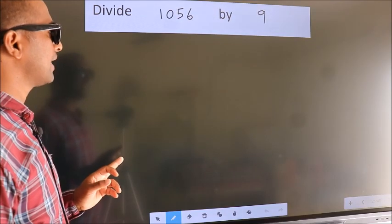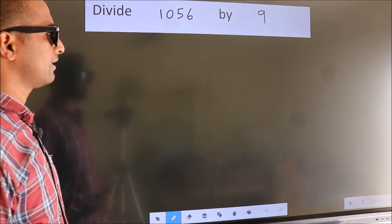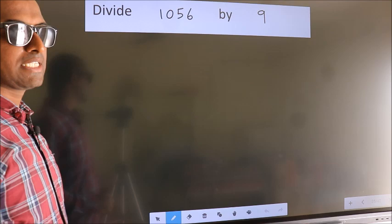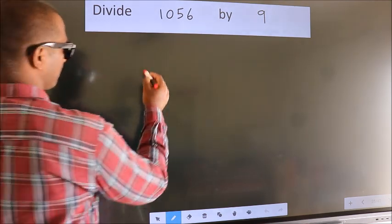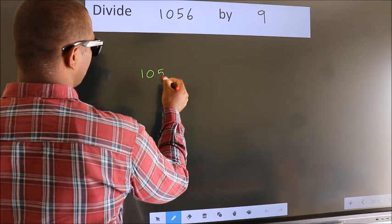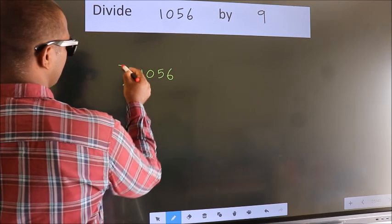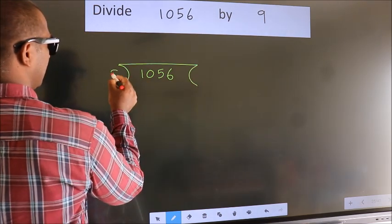Divide 1056 by 9. To do this division, we should frame it in this way: 1056 here, 9 here.